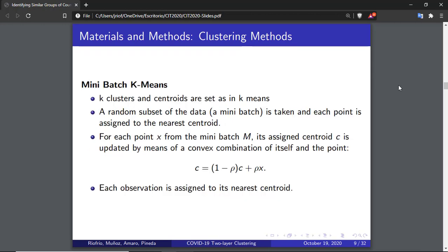Mini-batch K-means is a variation of a K-means algorithm, aimed to make calculations in less time. K-clusters and centroids are set as in K-means. Then, a random subset of the data is taken, and each point is assigned to the nearest centroid. For each point X from the mini-batch M, its assigned centroid C is updated, using a convex combination of itself and the point. Each observation is assigned to its nearest centroid. The process is repeated until the centroids do not have significant changes. This method is faster than K-means with a loss in the quality of the results.